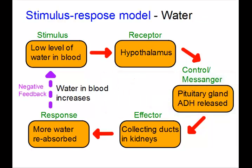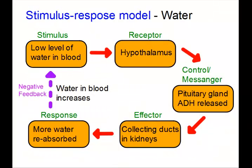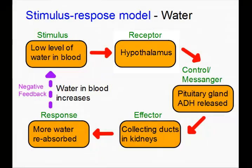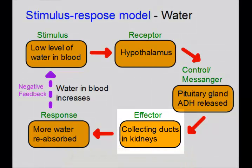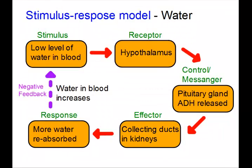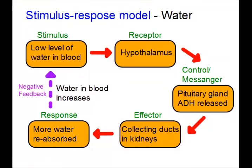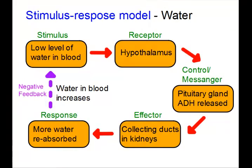Our next example is water levels in the blood. We'll assume the individual is quite dehydrated with a low level of water in the blood. The receptor is the hypothalamus. The message is controlled by a hormone called ADH — antidiuretic hormone — released by the pituitary gland. This causes a response in the collecting ducts in the nephrons of the kidneys, making them more able to reabsorb water from the urine, so the water level in the blood increases. That's negative feedback.